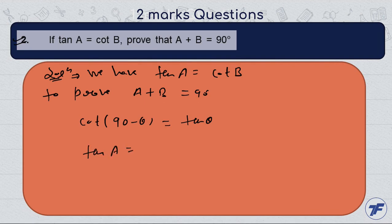So, tan A equals cot B can be written as tan of 90 minus B. Using this result,